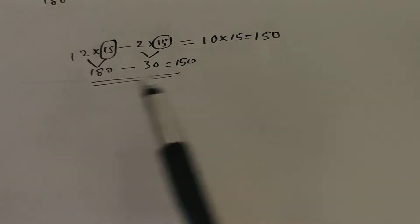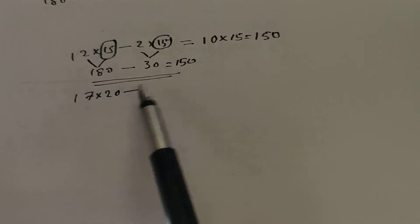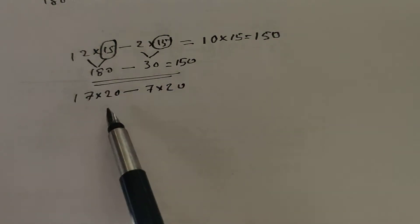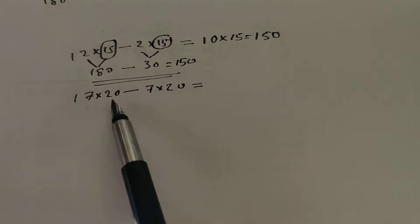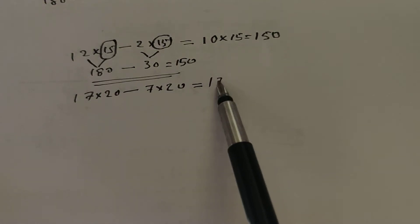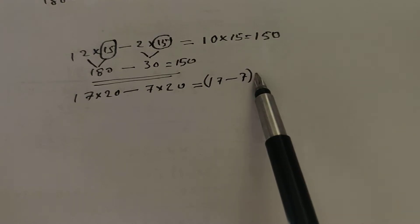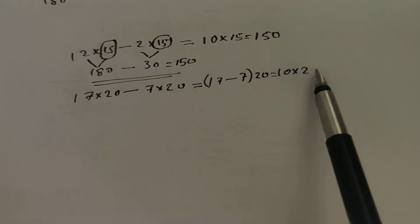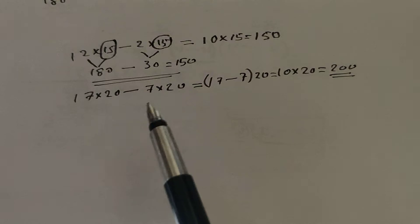And one more problem. We can discuss 17 into 20 minus 7 into 20. This type of calculation is difficult, so we can take an easy method. 17 twenties are there, and subtract 7 twenties. Then we get 17 minus 7 twenties are there. 17 minus 7 is equal to 10. So 10 twenties are there, and 10 into 20 makes 200. That is the calculation.